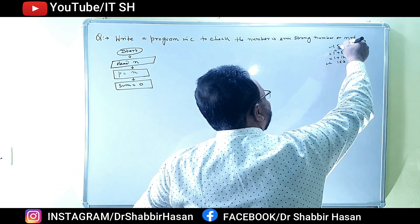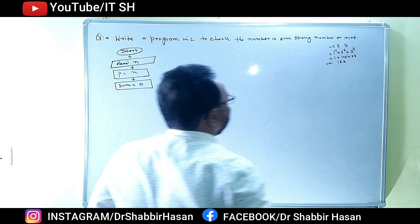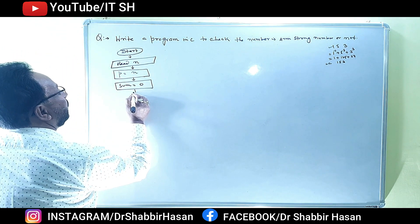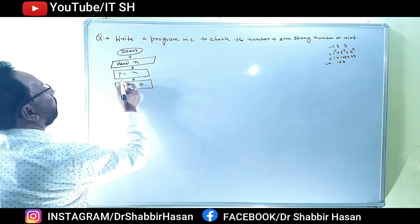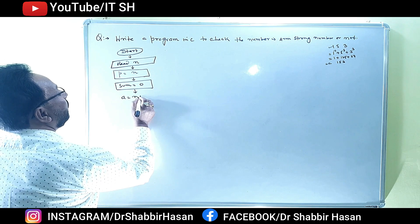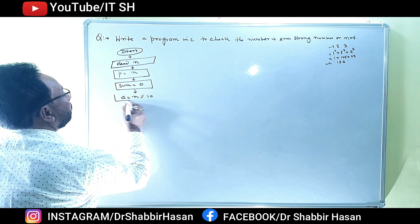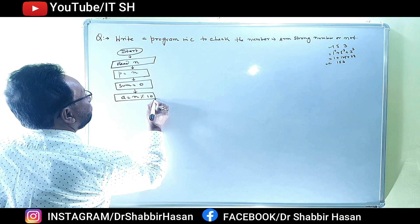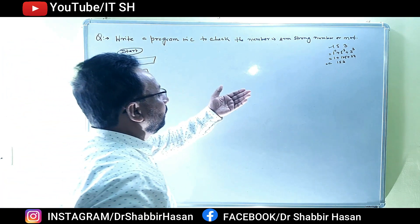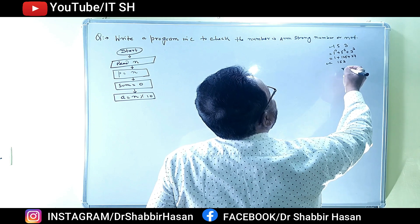तो सबसे पहले क्या करेंगे - modulus निकालेंगे। 153 का या कोई भी number है तो उसका modulus निकालेंगे। तो N A = N mod 10 हुआ - तो यह last remainder बचा हुआ आएगा। यानि जैसे number हो गया 153, जिसका modulus निकालेंगे 10 से, तो क्या आएगा? 3 आएगा।